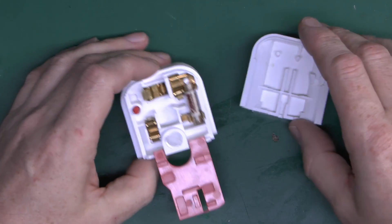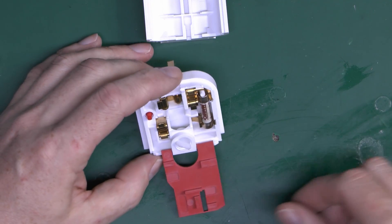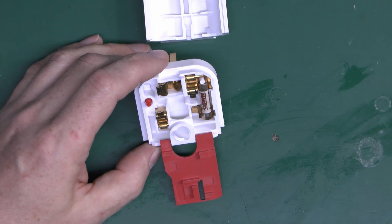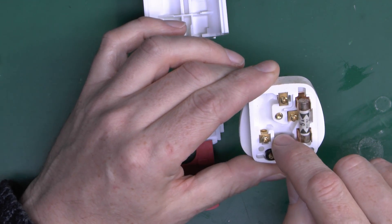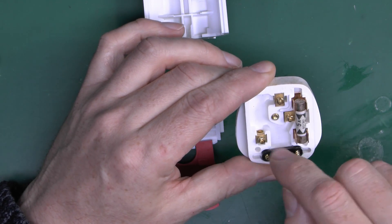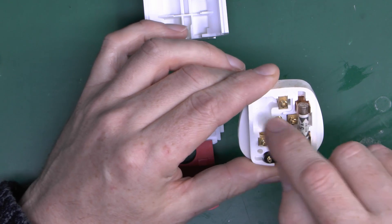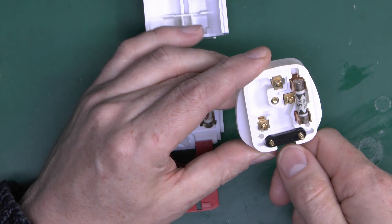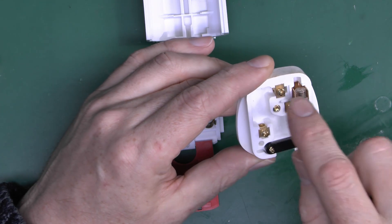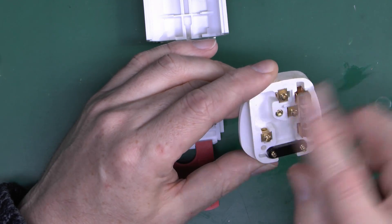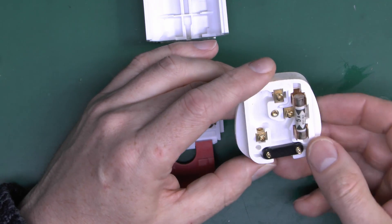Now the only problem with this design, and possibly one reason why it didn't actually catch on particularly much, is that in normal plugs the whole idea here is that the earth connection is longer deliberately, and when you actually wire these you make that pretty much as long as possible, so if the flex was pulled away here what would happen is that these would pull out first, leaving the earth connected until last.